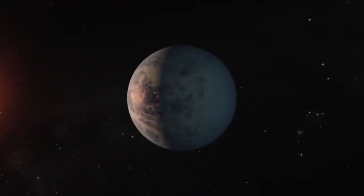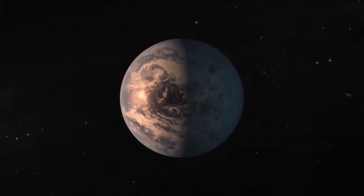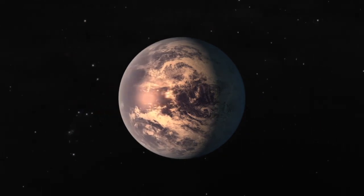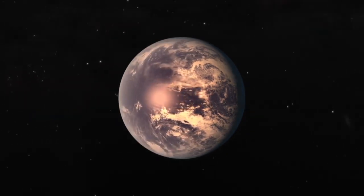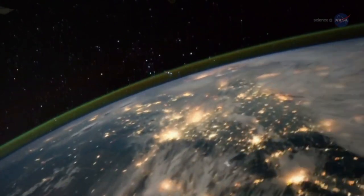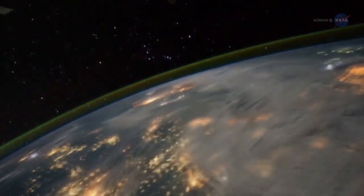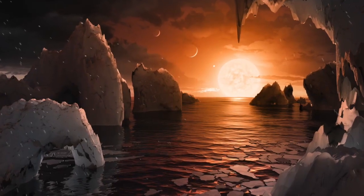Next, there's TRAPPIST-1e. Out of all the planets orbiting this star, TRAPPIST-1e is the most likely of being habitable. Scientists have concluded it likely has a compact atmosphere like the rocky inner planets of our solar system.